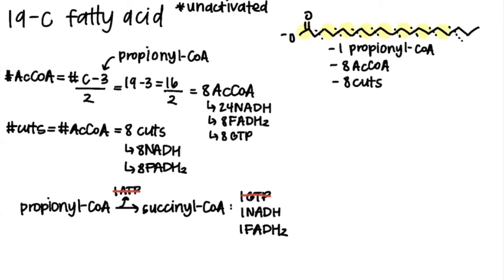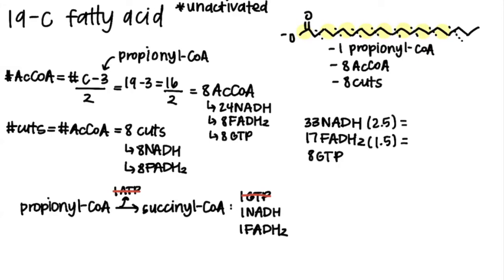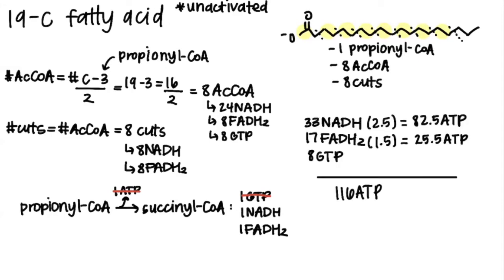Now we add everything up and multiply by the respective numbers to get 116 ATP. But because we determined it was unactivated, we subtract 2 ATP for activation. So our total is 114 ATP yielded from a 19-carbon fatty acid.